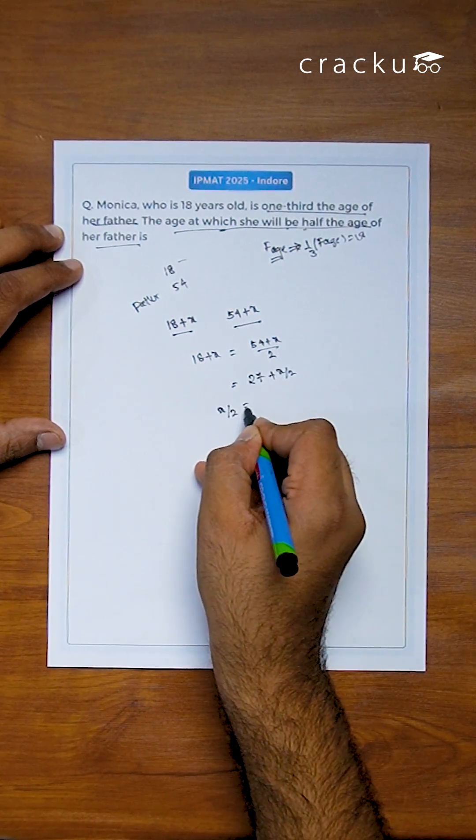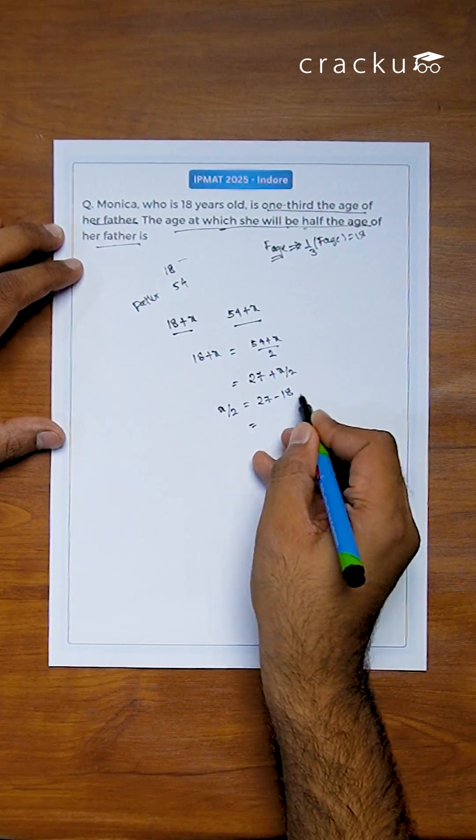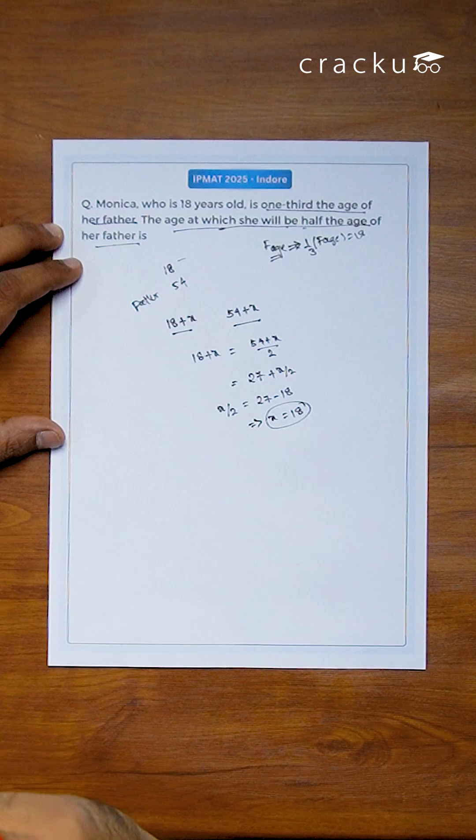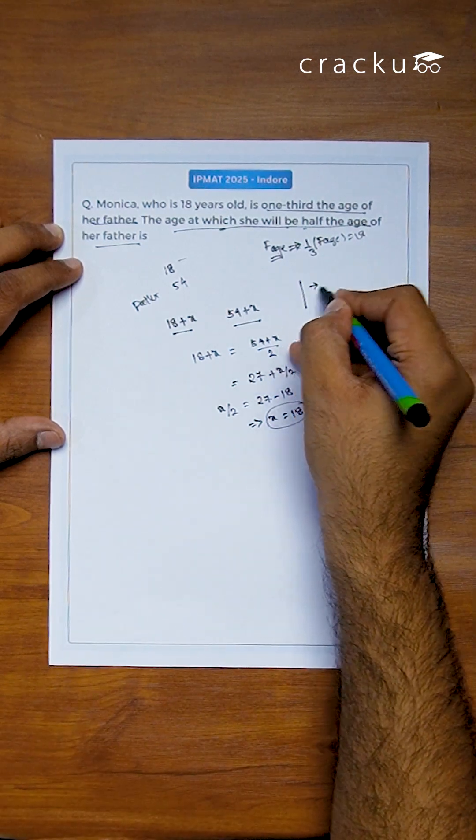So what is x minus x by 2? It is x by 2, which is 27 minus 18. This is 9. So this implies x is equal to 18.